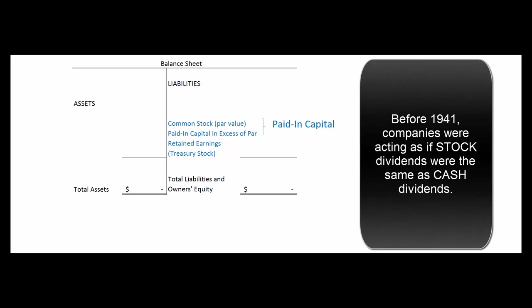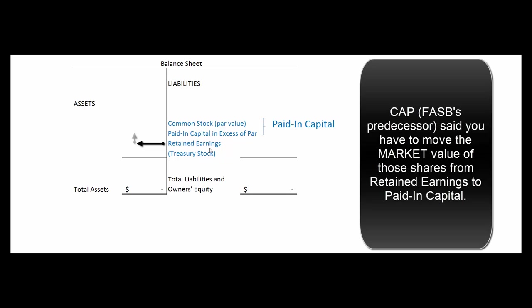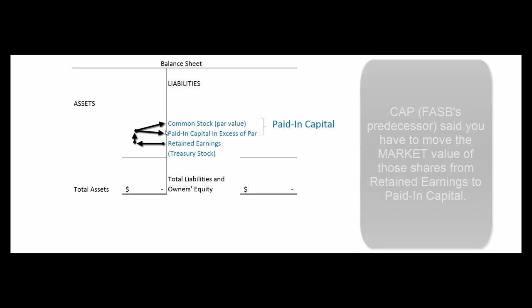There is a journal entry to make in the case of a stock dividend. Before 1941, companies were doing stock dividends all the time, and the Committee on Accounting Procedures — which preceded FASB — said they were misleading people into thinking these were valuable pieces of paper. They said if you want to declare a stock dividend, you've got to take monies out of retained earnings and move them into paid-in capital, specifically the market value of those shares, not just the par value.